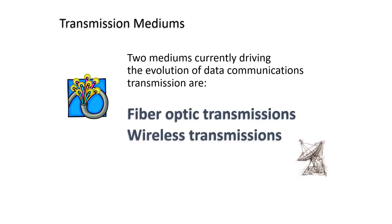One of the decisions a business user must make is a transmission medium. The two popular mediums driving data communications is fiber optic and wireless transmissions. Fiber optic communication transmits information from one place to another by sending pulses of infrared light through an optical fiber. It is cheap, has high capacity, and is difficult to tap, so it's more secure.